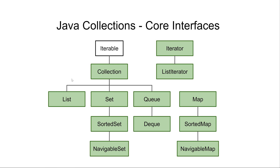There are a couple of interfaces that are sub-interfaces, meaning they extend the Collection interface. The first one is List. The List interface represents an ordered list of elements, and the same element can be present more than once in the list. You can also iterate the objects in the order in which they are added to and stored internally in the list.